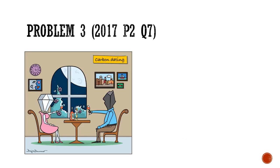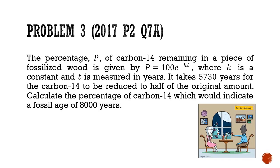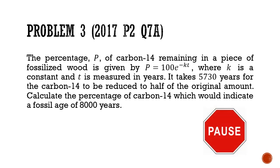So our last problem for today is taken from the O levels from the 2017 paper 2, question 7. And this is a question on carbon dating. Now the question goes like this. The percentage p of carbon-14 remaining in a piece of fossilized wood is given by the formula p equals 100 e to the power of negative kt, where k is a constant to be determined, and t is measured in years. And we know the half-life of carbon-14 is 5730 years. So it takes 5730 years for the carbon-14 to be reduced to half of the original amount. And this is through radioactive decay. So calculate the percentage of carbon-14, which would indicate a fossil age of 8,000 years. Pause the video here and give this question a good try.